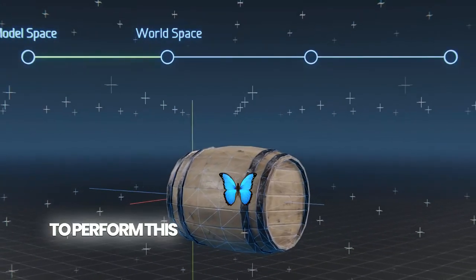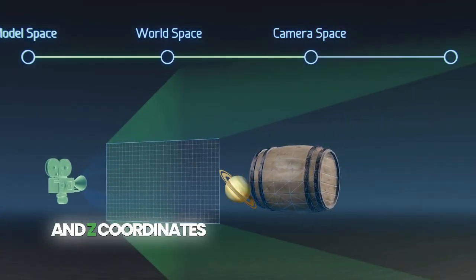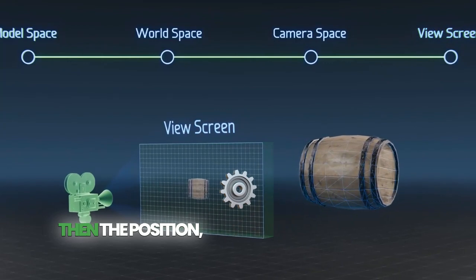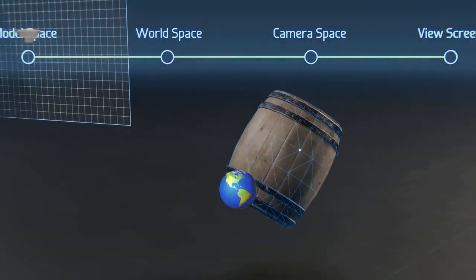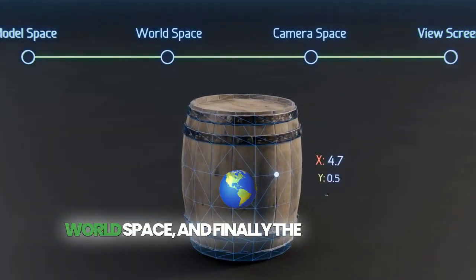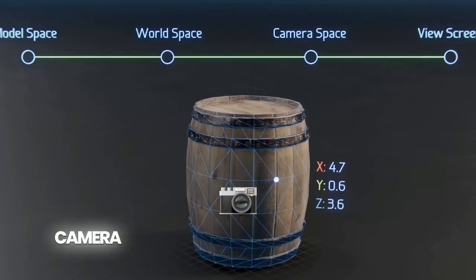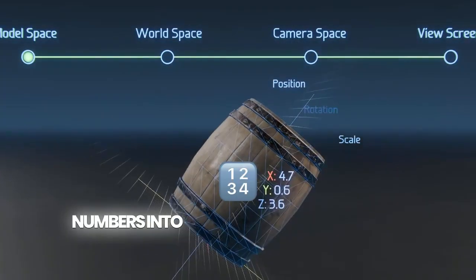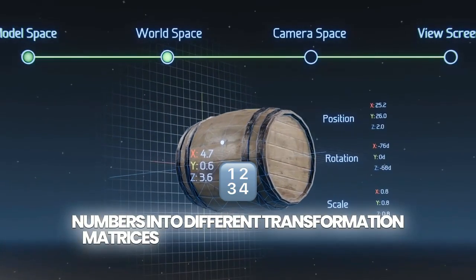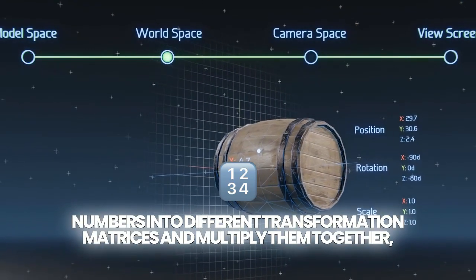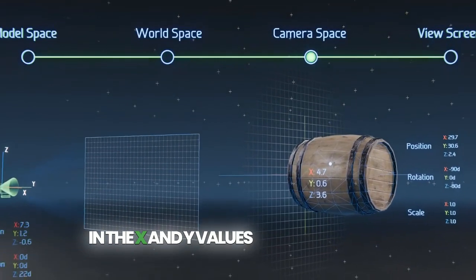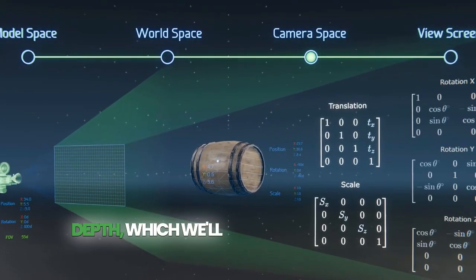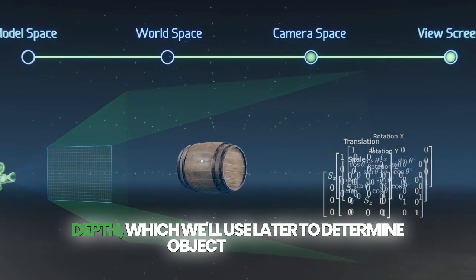To perform this transformation, we use the x, y, and z coordinates of that vertex in modeling space, then the position, scale, and rotation of the model in world space, and finally the coordinates and rotation of the camera and its field of view. We plug all these numbers into different transformation matrices and multiply them together, resulting in the x and y values of the vertex on the view screen, as well as a z value or depth, which we'll use later to determine object blocking.